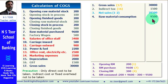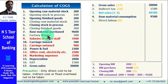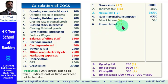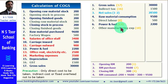After raw material consumption, we take into consideration direct labor, which is factory wages — item number 8 — with a value of 500. Then we add power and fuel, item number 12, with a value of 2,000. Then other manufacturing expenses including carriage inward, item number 10, with a value of 500.